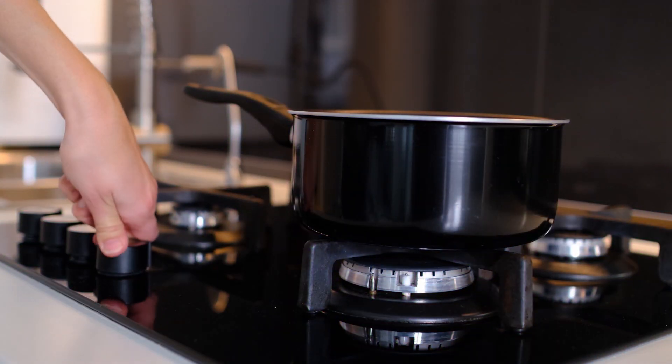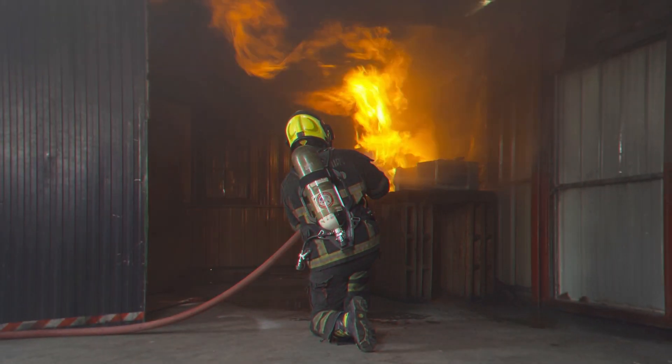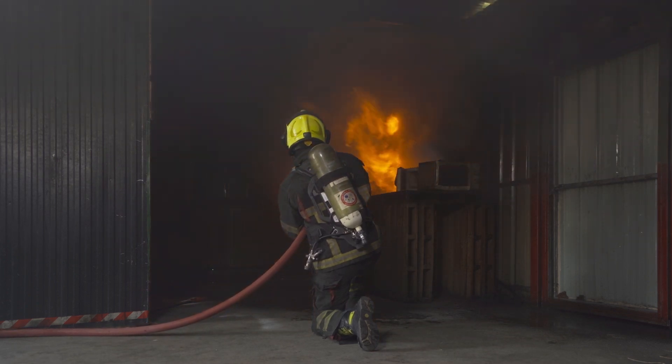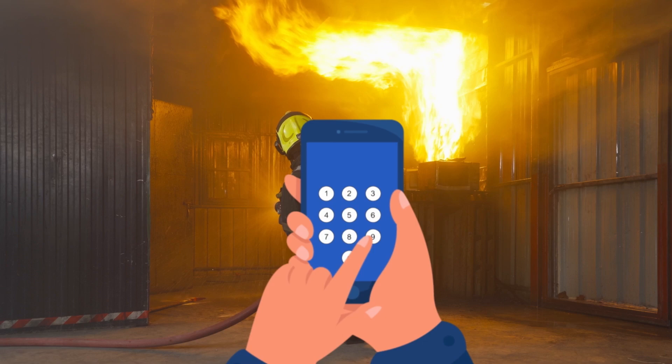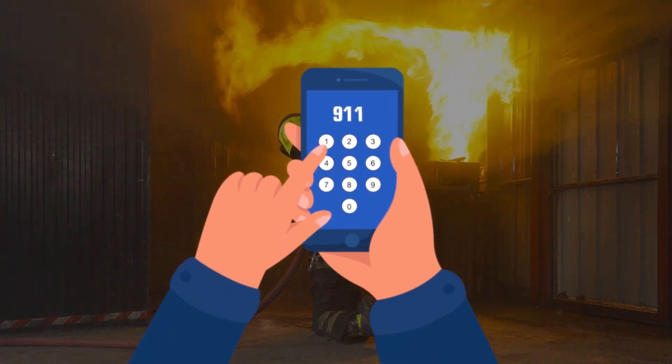When grease fires occur, turn off the heat source as soon as possible, and cover the utensil, area, or pot with a lid. This cuts off the oxygen supply that the fire needs to continue. But most importantly, call the fire department immediately.